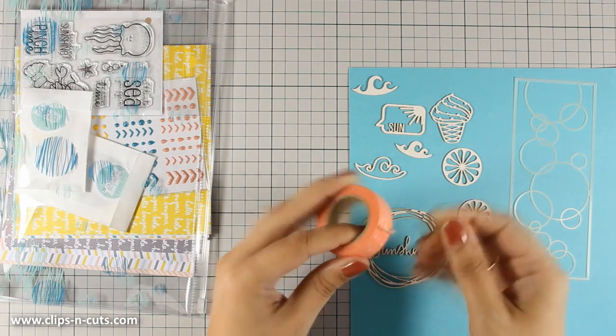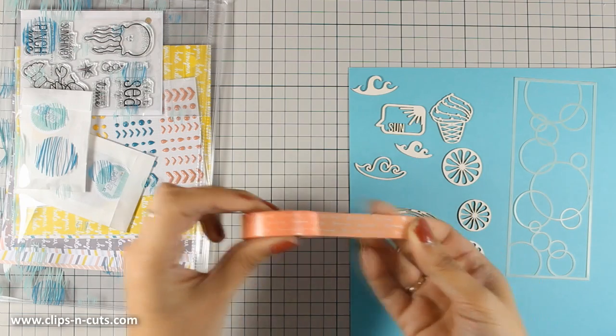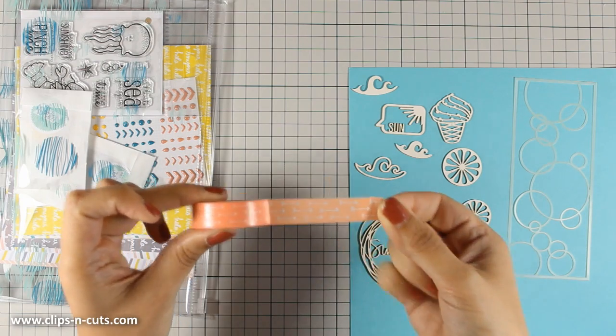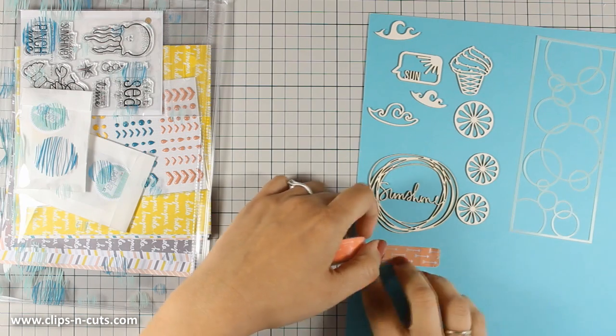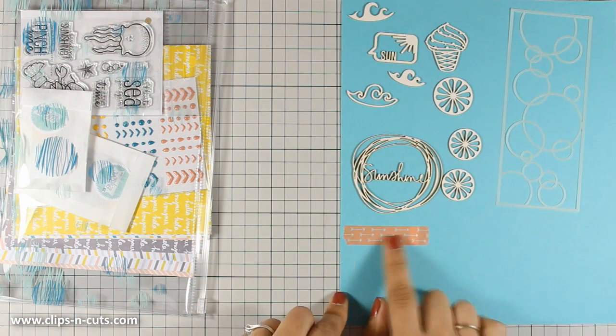So for example there is a washi tape. I am going to peel off a piece so you can see the design. There are some transparent arrows. I am going to stick it on my cardstock so you can see the design better.